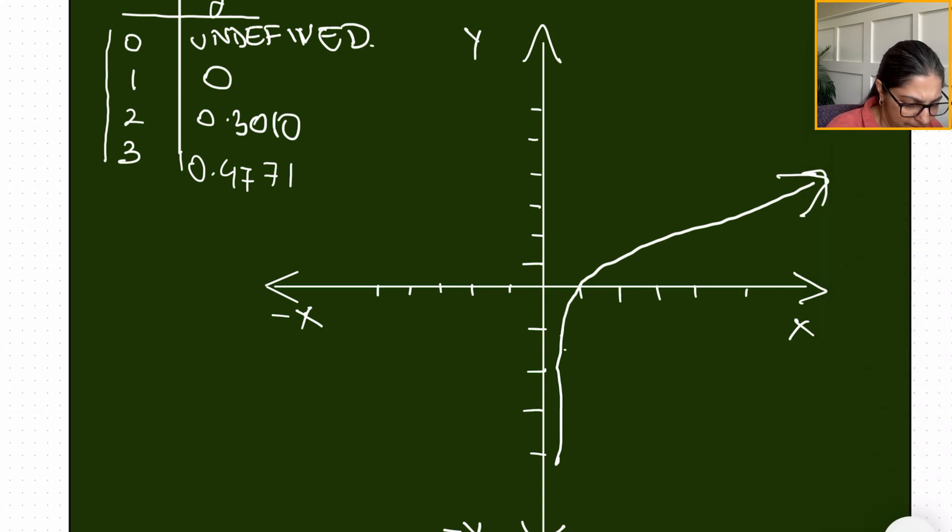Meaning to say it will keep going up, but when we look at the y-axis, meaning as your x value is approaching zero from the right side, then the y values keep going down. So it exponentially drops.